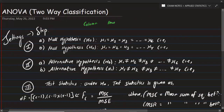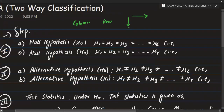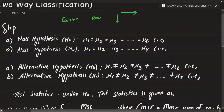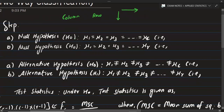We are setting up the table. We have a horizontal line and a vertical column. For the first step, I am setting up the hypothesis. The null hypothesis is set at zero.